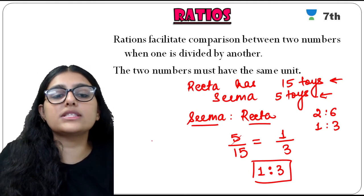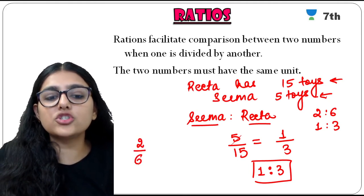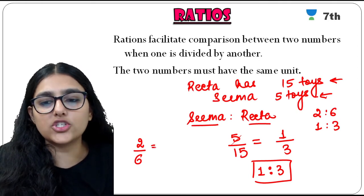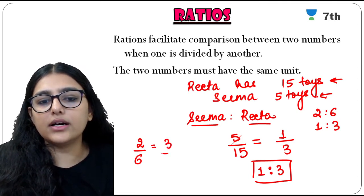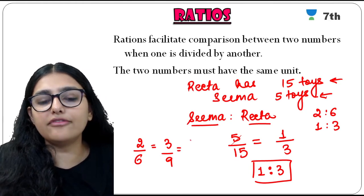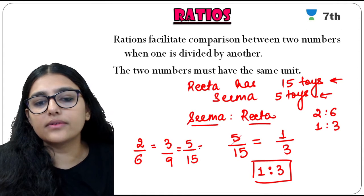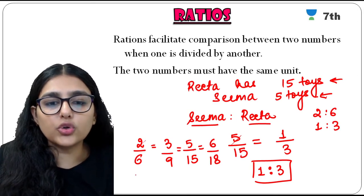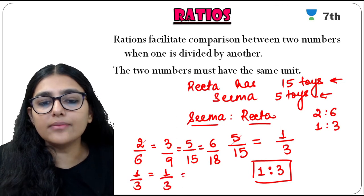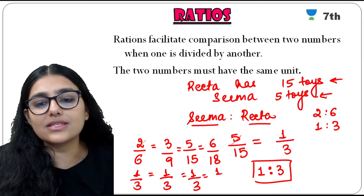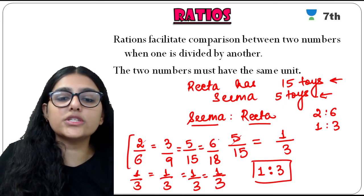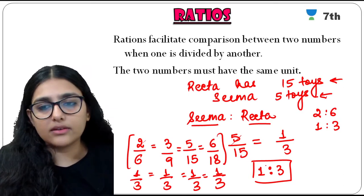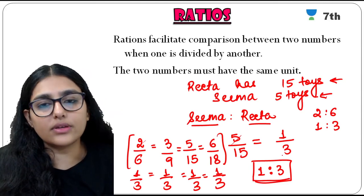This brings us to equivalent fractions. When we talk about equivalent ratios, if the lowest form is the same, they are equal to each other. For example, 3/9, 2/6, 5/15, and 6/18 are all equivalent because when reduced to lowest form they all give 1/3, which is the common factor. So the ratio is 1:3.